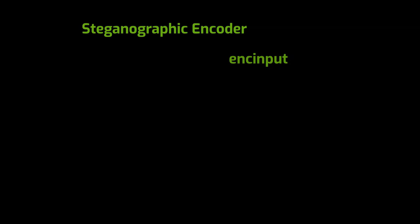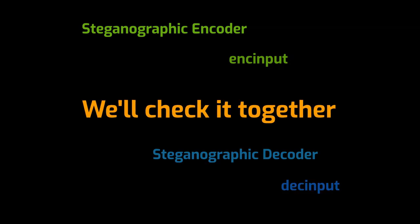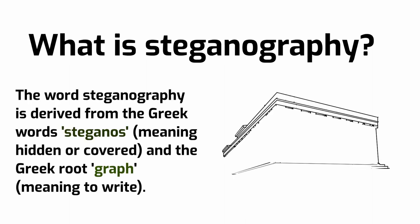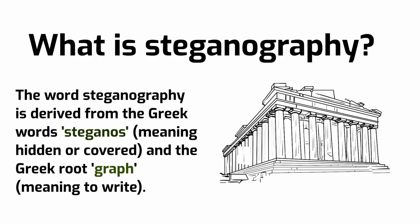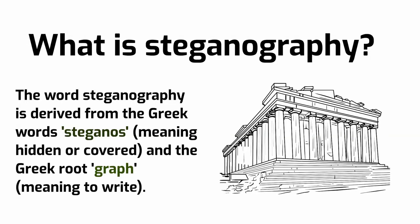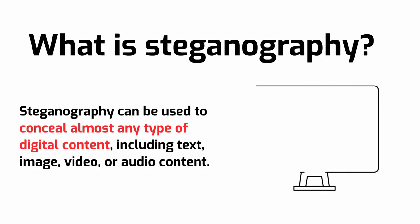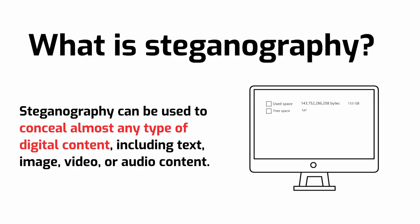Today we try encoder and decoder — we'll check it together. What is steganography? The word steganography is derived from the Greek word steganos, meaning hidden or covert, and the Greek root graph, meaning to write. Steganography can be used to conceal almost any type of digital content, including text, image, video, or audio content.